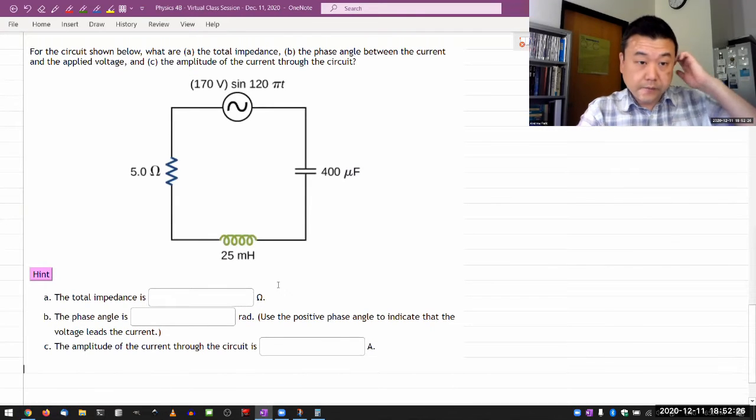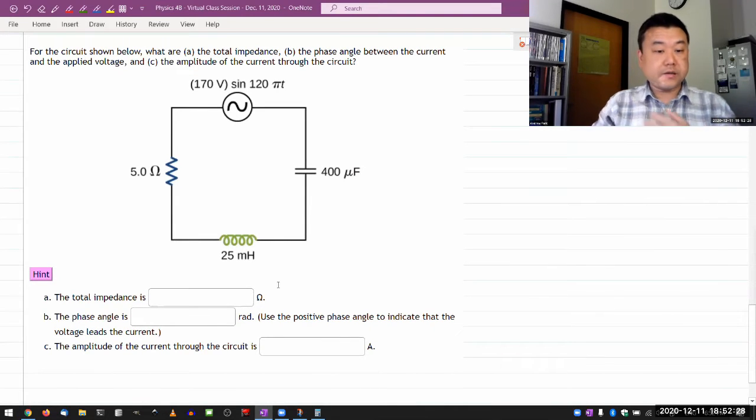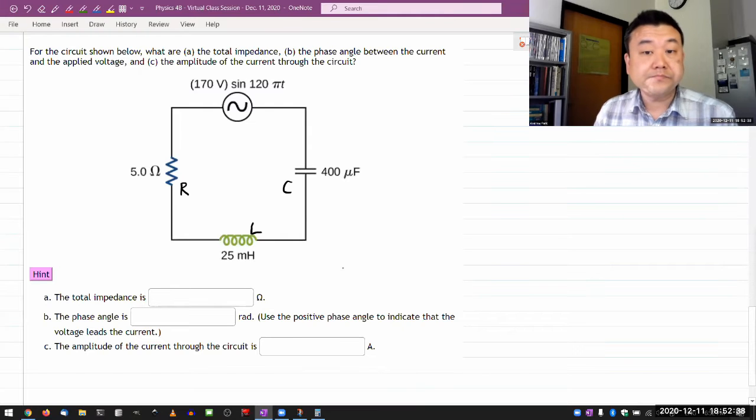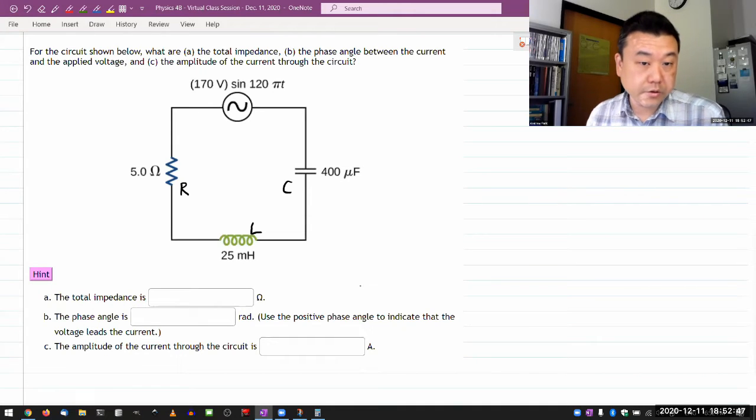Okay, it says for the circuit shown below, it's asking for the total impedance of the circuit or total impedance of my resistor, inductor, and capacitor, and the phase angle between the current and applied voltage. I'll need to figure that out again. And the amplitude of the current through the circuit.